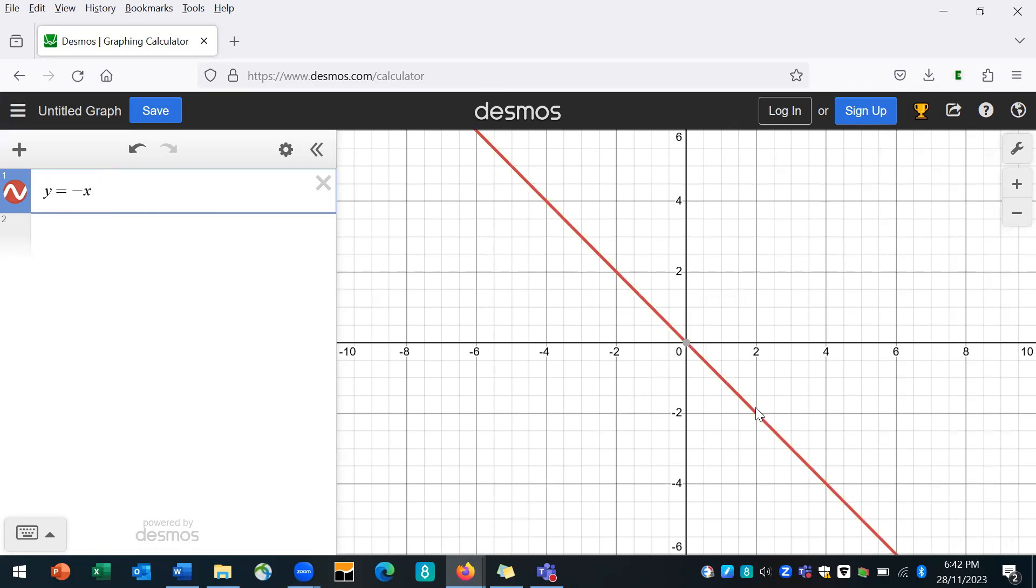So when x is 2 here, y is minus 2. When x is 4 here, y is minus 4. So that's what happens. We can see it's a straight line with a negative gradient. It slopes from left to right, downwards.